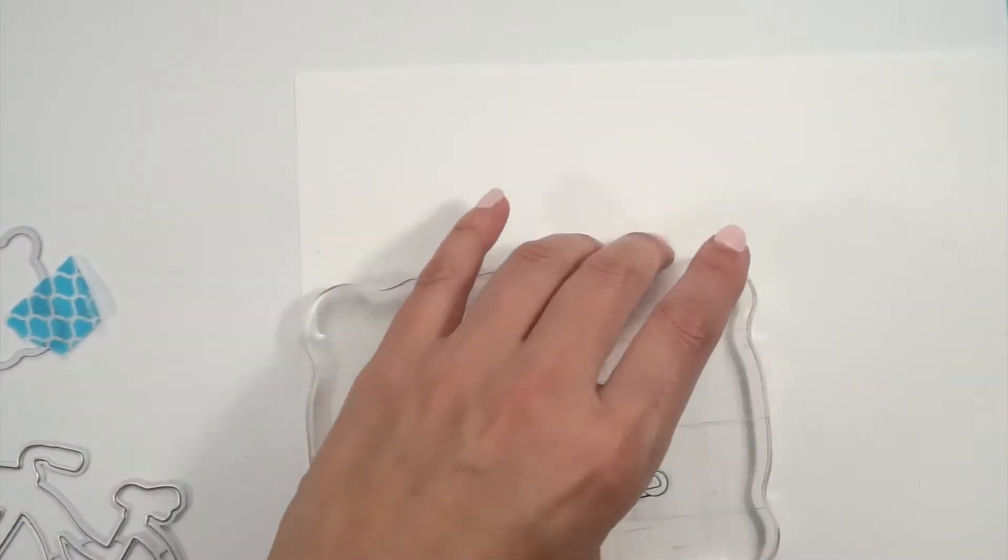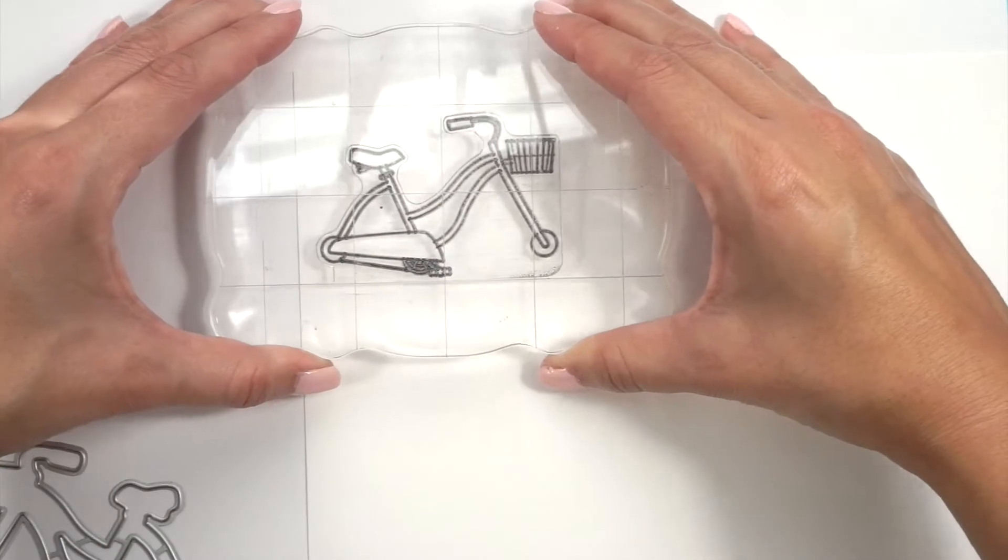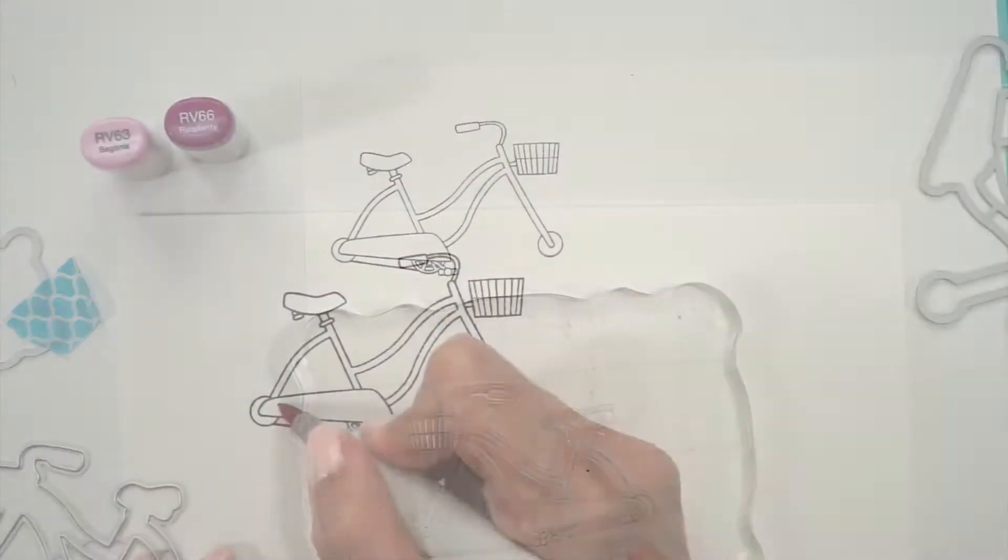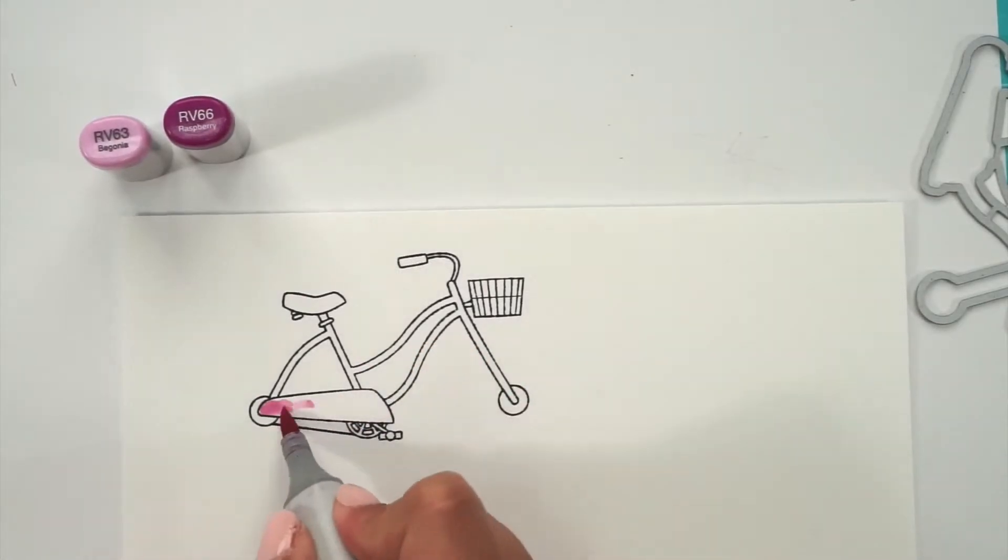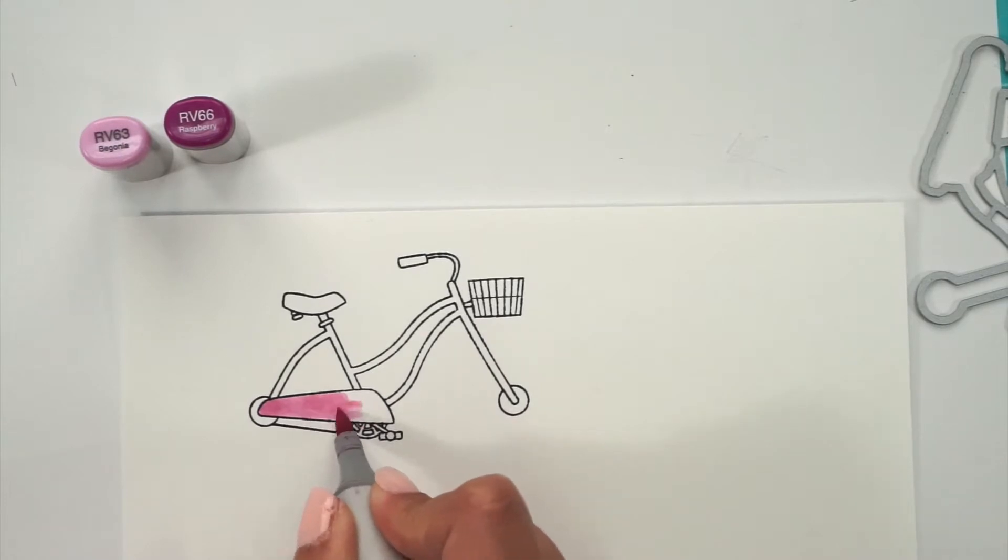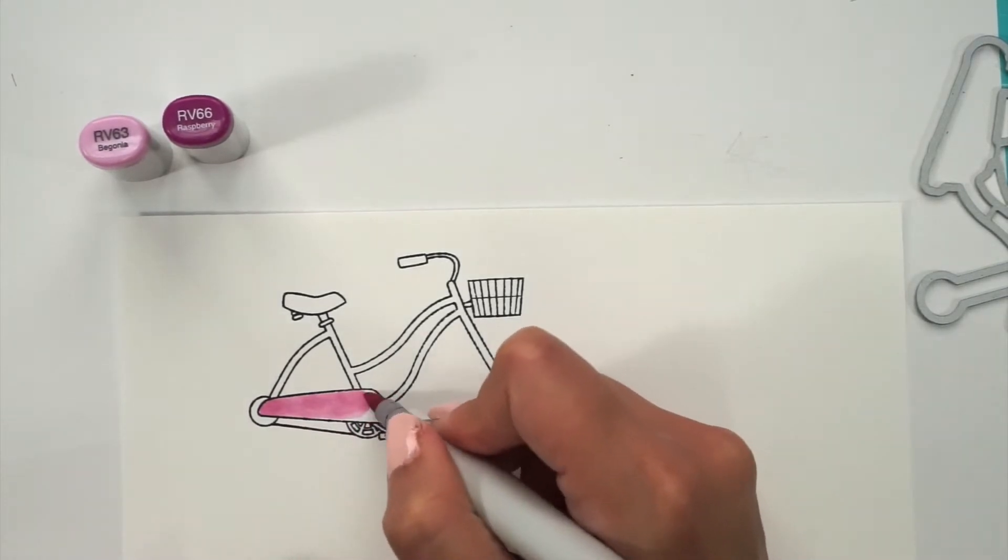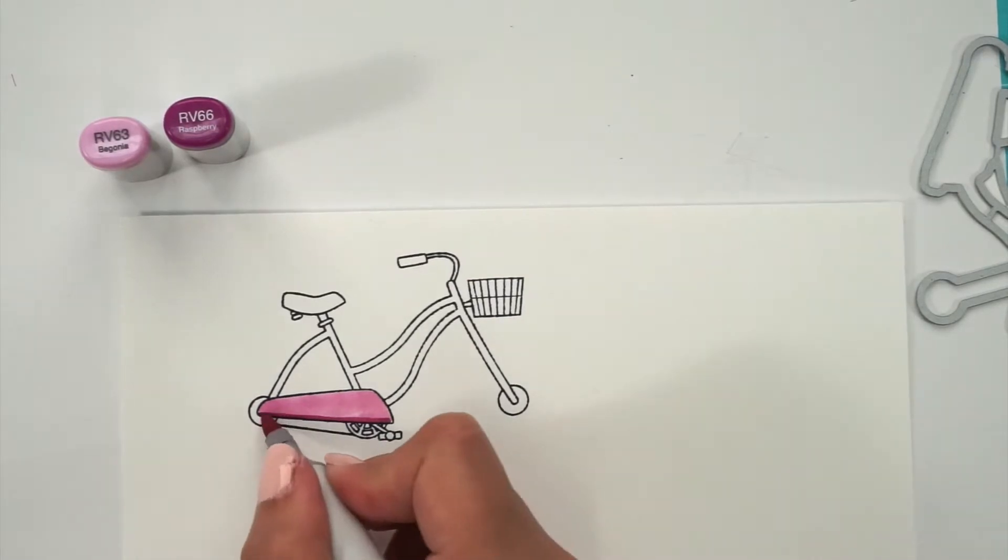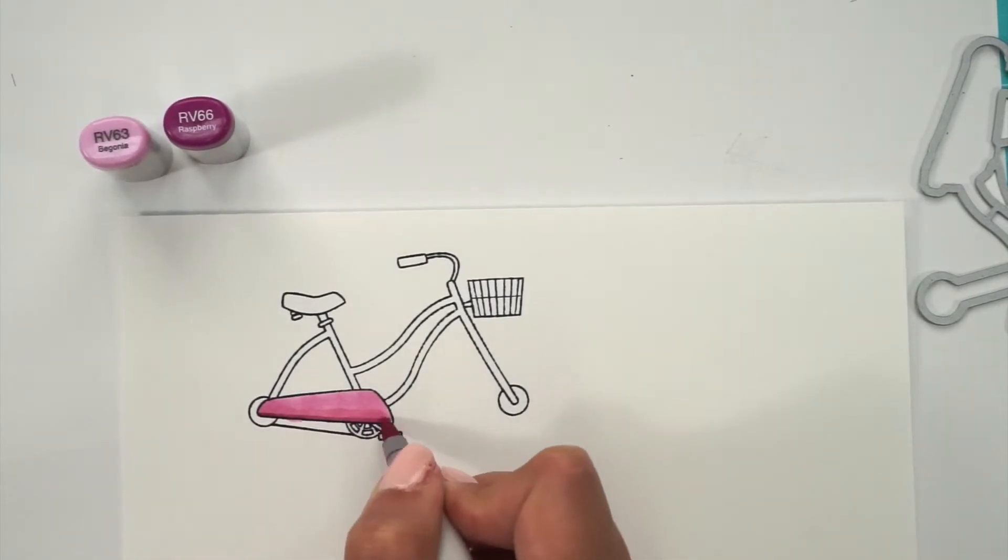What I was mentioning before about having the animation stamps and the regular stamps in one set is very nice because now you can create an animated card but you can also create a regular card. So you have the regular bicycle wheels or the animated ones. You choose which ones you want to make and create. So it's so much fun. You have a lot of possibilities and a lot of things to do with one set.